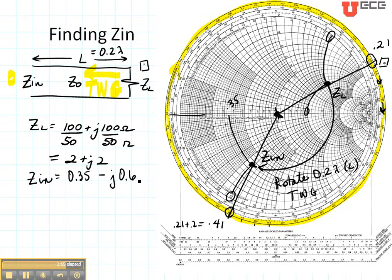This is not in ohms. This is a normalized value. So to get it in ohms, I denormalize by multiplying by Z naught. So that gives me 17.5 minus j30 ohms.